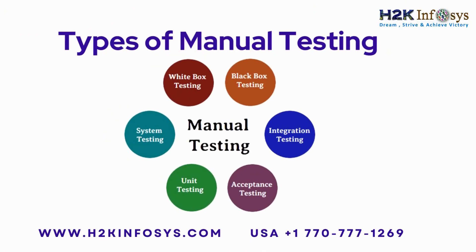Types of Manual Testing: White-box testing, conducted by developers, involves testing every line of code for usability and design. Black-box testing focuses on functionality without visibility into internal code. Integration testing checks interactions between integrated components. Acceptance testing is performed by customers to certify system requirements before production. Unit testing validates individual modules or components. System testing tests the entire system to ensure it meets all required standards.